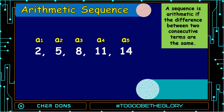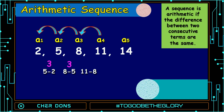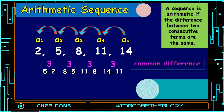So we're going to subtract the second term from the first term. A2 minus A1, that is 5 minus 2, the answer is 3. Next, subtracting A3 minus A2, that is 8 minus 5, it is equal to 3. A4 minus A3, that is 11 minus 8, the answer is 3. And A5 minus A4, that is 14 minus 11, it is equal to 3.